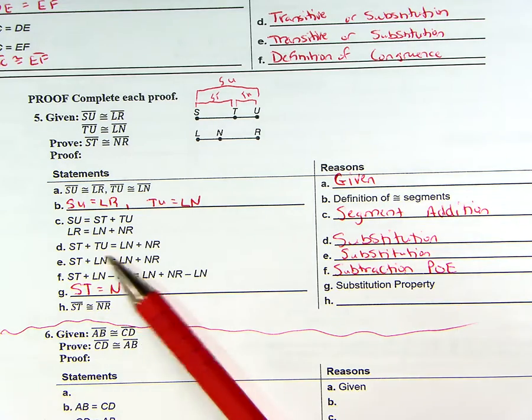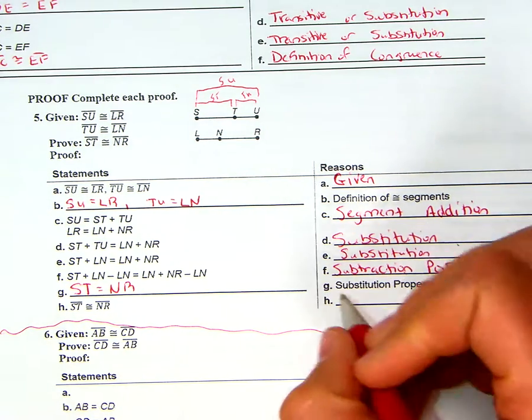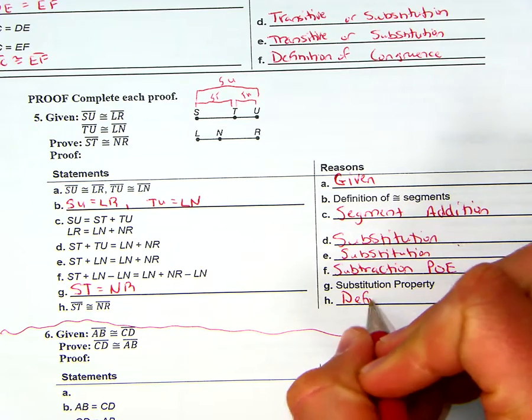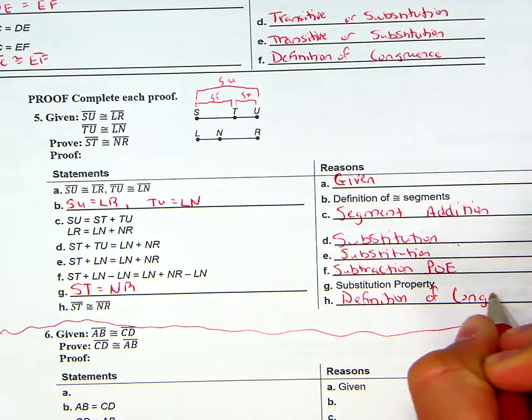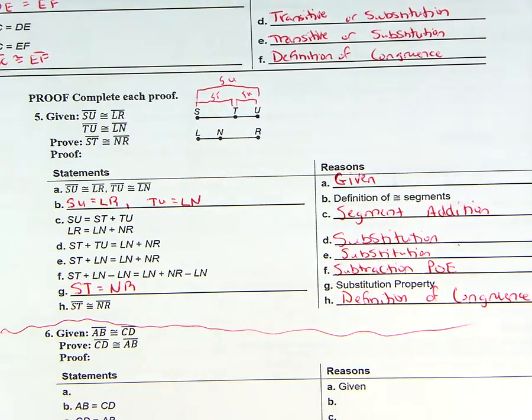And then finally, we're going from equal sign to congruence. That's just the definition of congruence. Now, really, it's congruence segments. That's what your book likes to call it. I just call it definition of congruence to make it a little bit easier.